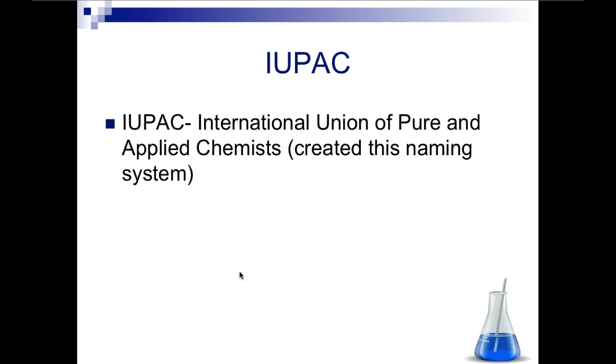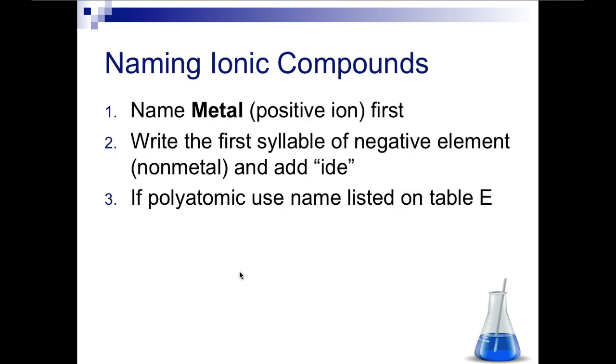Let's look at the three main rules for naming compounds. First, you're going to name the metal first, which is your positive ion, because the metal is the least electronegative and it's written down first when we read our formula. Then you're going to write the first syllable of the negative element or the non-metal, and then you're going to add '-ide' to the end.